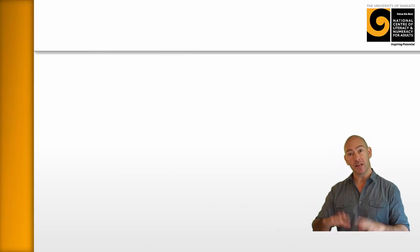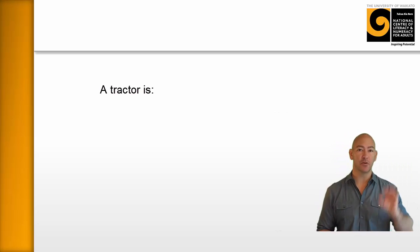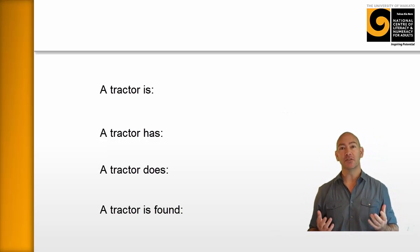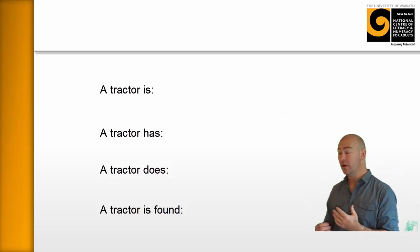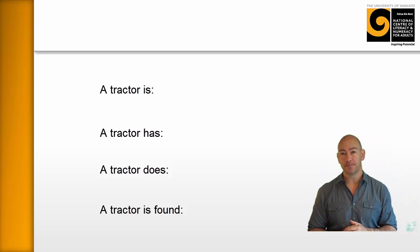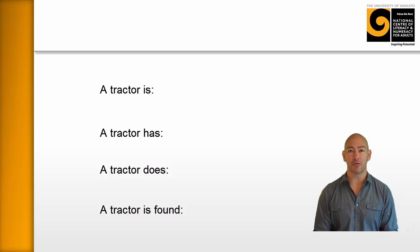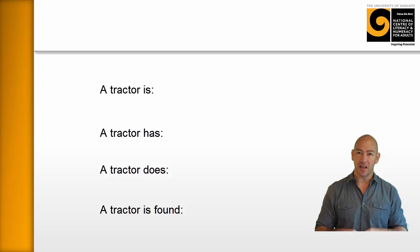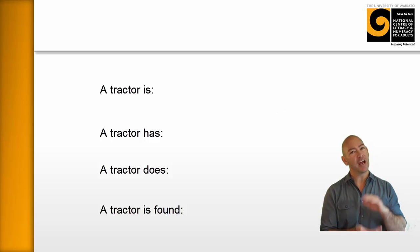So the idea is the learners have written the concept map, filled it out, and they've got all their words there. And now what we want them to do is write a single sentence based on each of the prompts. So a single sentence for is, a single sentence for has, does, and is found. And the idea is that the learners can see the spelling word. So for example, I might have written this up on the board, or the learners might have written it in groups. And the idea is they look at those words that are in the is quadrant, and they have to write a simple sentence. And it will depend on the literacy skills of your learners about how complex that sentence or sentences are going to be.